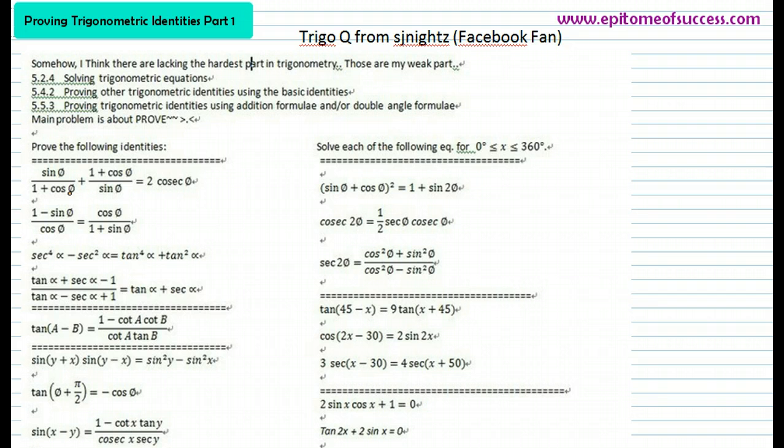Sin theta over 1 plus cos theta plus 1 plus cos theta over sin theta should equal to 2 cosecant theta. Let's do it in the next page. I'm going to write the question here. You're supposed to prove this. So, sin θ over 1 plus cos θ plus 1 plus cos θ over sin θ is equal to 2 cosecant θ.